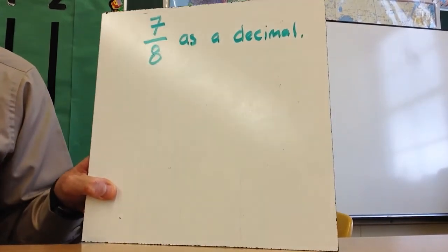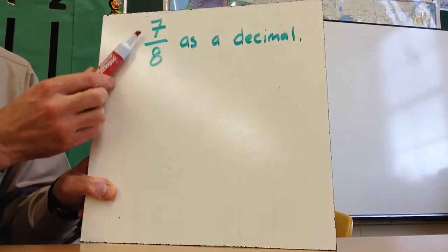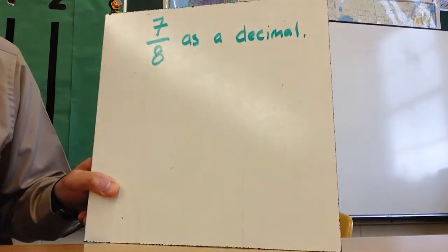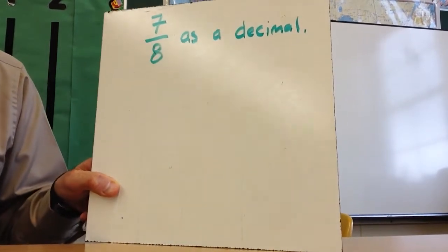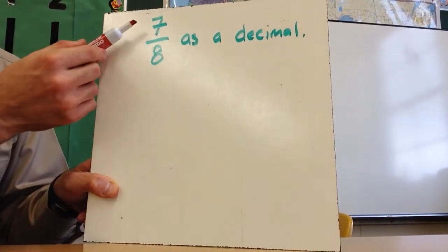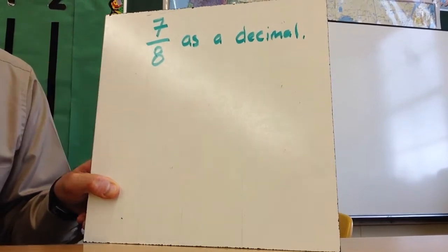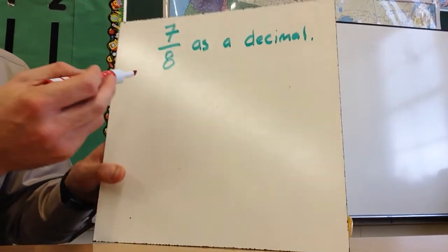And so you get a fraction that's 7 8ths, right, 7 over 8. We want to change this into a decimal. I know that this is going to be less than 1 because the numerator is smaller than the denominator. So I know this is going to be 0 point something.